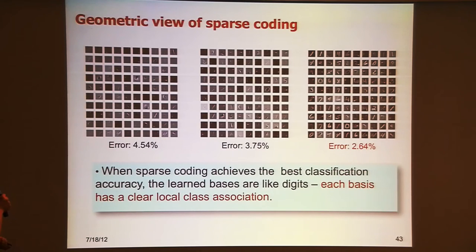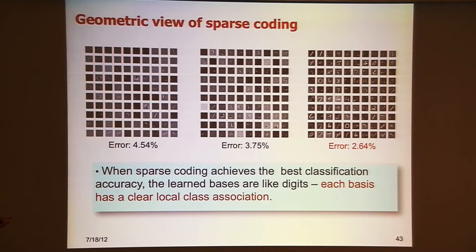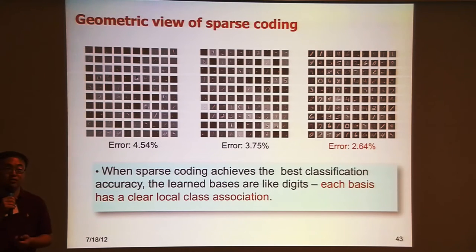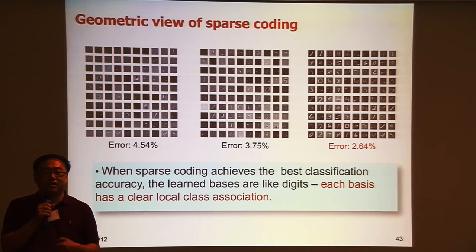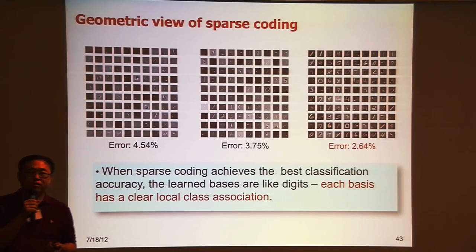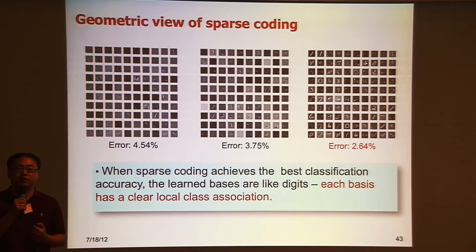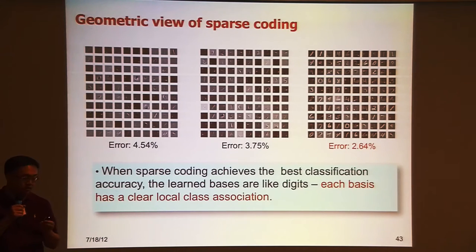Looking at the whole experiment: when sparse coding achieves the best classification accuracy, the learned bases are kind of like digits — each digit has a clear local class association. Even though in this canonical sparse coding formulation we never explicitly implement a locality constraint, the result is local, especially when the desired classification performance is achieved.